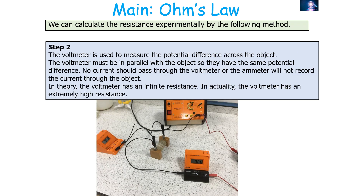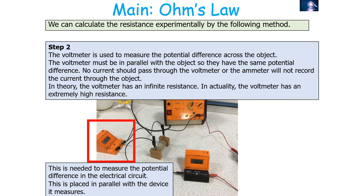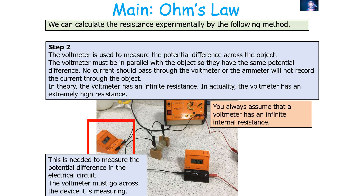The second step is to use a voltmeter to measure the potential difference across the object. The voltmeter must be placed in parallel with the object so they share the same potential difference. No current should pass through the voltmeter, so in theory it has infinite resistance — in practice it just has a very high resistance. You always assume a voltmeter has infinite internal resistance.